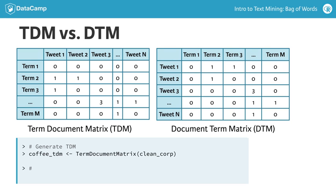Once again, the aptly named document term matrix function creates a matrix with documents as rows, shown here. In its simplest form, the matrices contain word frequencies.